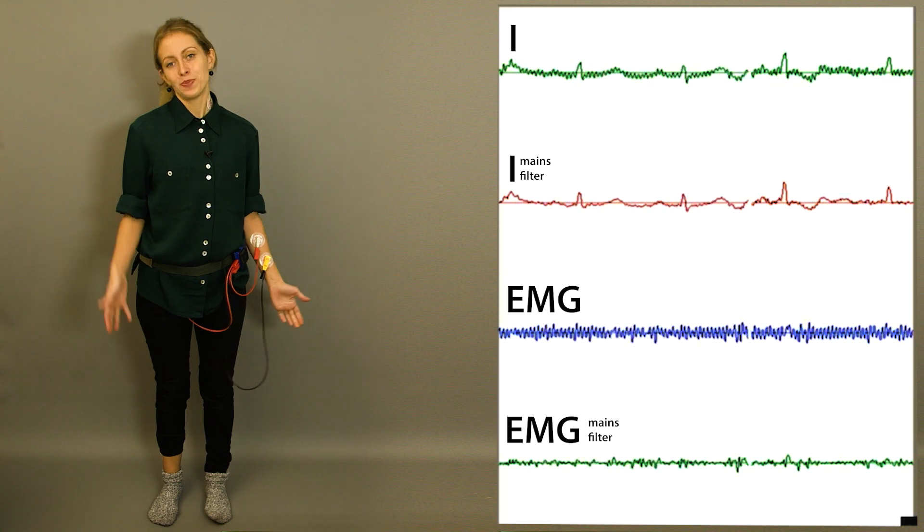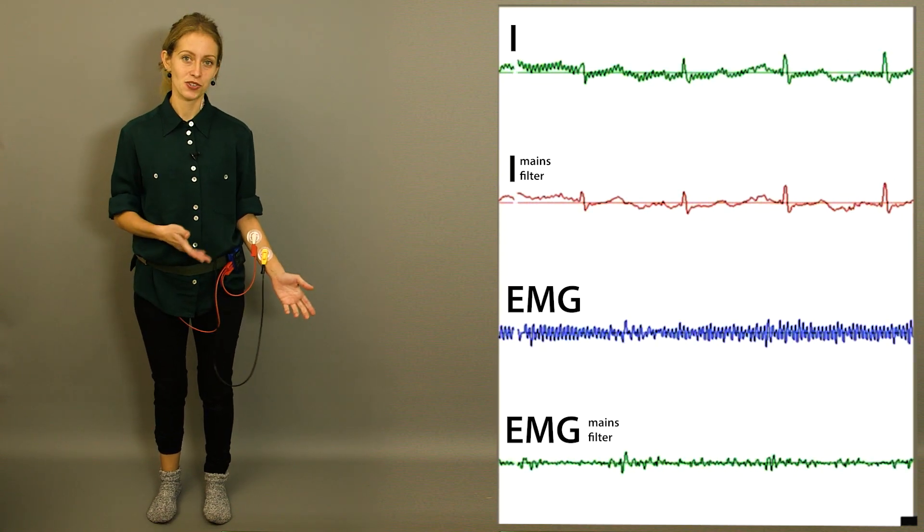Well, three electrodes will give you a much better power line rejection than the two electrode version.